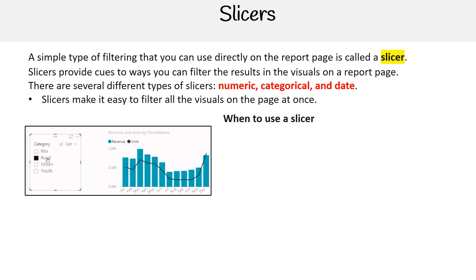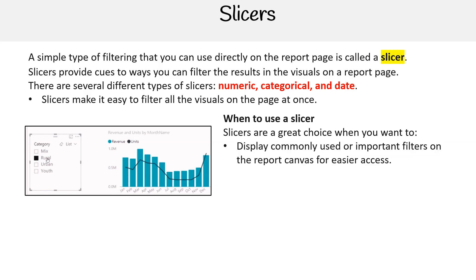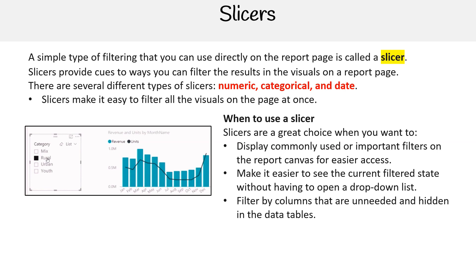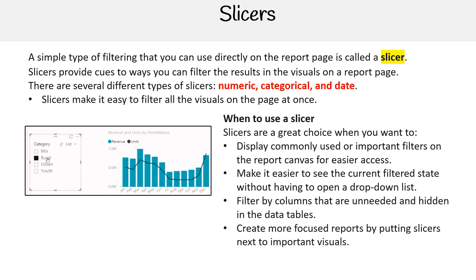When should you use a slicer? Slicers are a great choice when you want to display commonly used or important filters on the report canvas for easier access, make it easier to see the current filtered state without having to open a drop-down list, filter by columns that are unneeded and hidden in the data tables, and when you want to create more focused reports by putting slicers next to important visuals.